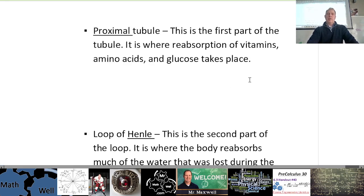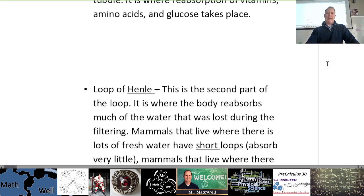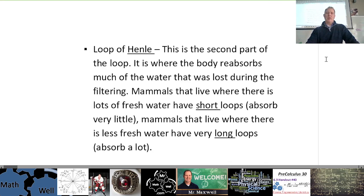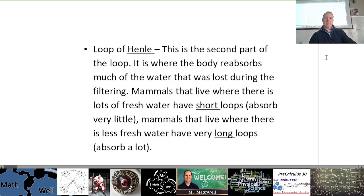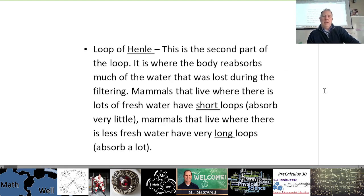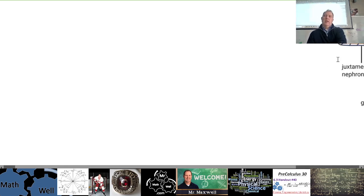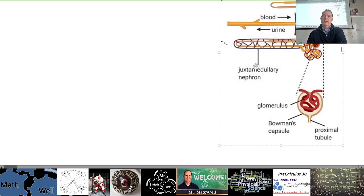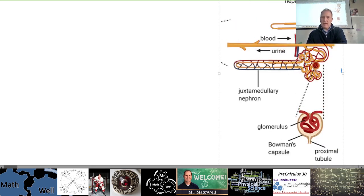The proximal tubule is the first part of the tubule, where the reabsorption of vitamins, amino acids, and glucose takes place — that's the PCT from the video. The loop of Henle is the second part; this is where the body reabsorbs much of the water that was lost during the filtering. Mammals that live where there is lots of fresh water have short loops and absorb very little, while mammals that live where there is less fresh water have very long loops to absorb a lot.